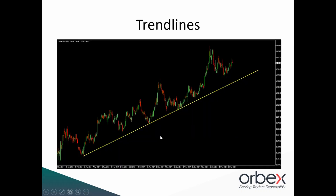Here you can see a bullish trend line — this upward gradient sloping higher, connecting these rising lows. We start by identifying a low point to initiate our trend line, then connect it to a second point on the chart. Because this is a bullish trend line, we're looking to find rising lows — price moves higher, retraces lower to put in a swing point, then moves higher again. Once we've connected these two lows with our diagonal line, we have our trend line in place and can monitor price as it tests it on further occasions.